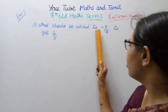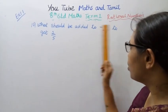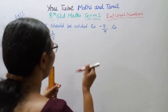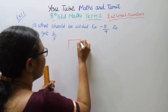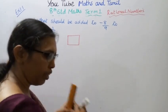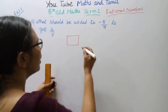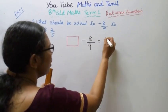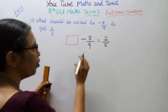What should be added to minus 8 by 9 to get 2 by 5? Let the number be x. One number is minus 8 by 9. We need to add something to it to get 2 by 5.